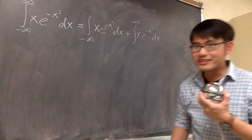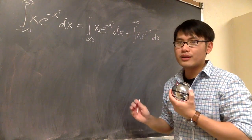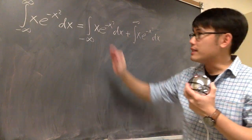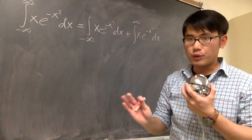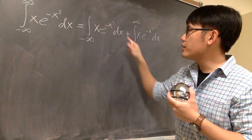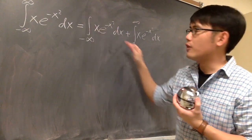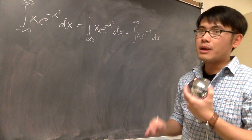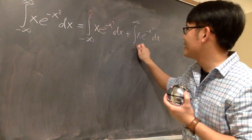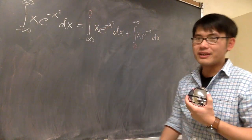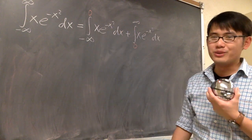A natural question is: what should we pick for that split number? As long as it's finite and the same in both integrals, it's okay. You can pick one, or five — but you can't beat zero for simplicity. So I'll choose zero as the split point for both.